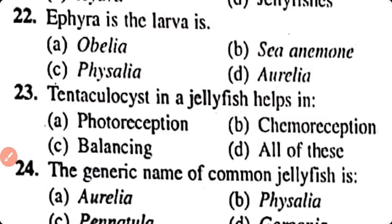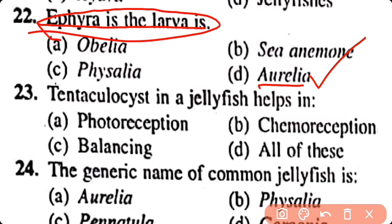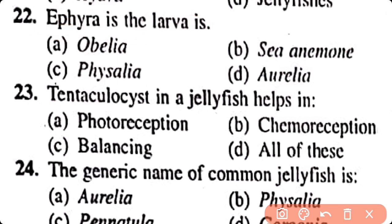Question number 22. Ephyra is the larva in: Obelia, Sea Anemone, Physalia, Aurelia. Correct answer is option D. Aurelia, which belongs to class Scyphozoa, has ephyra which is an immature larval stage.